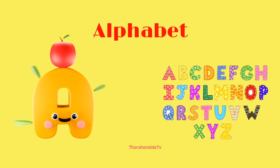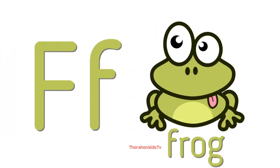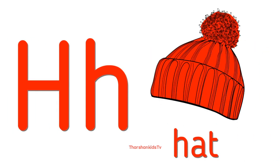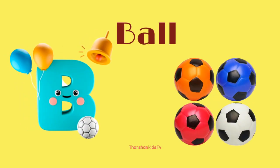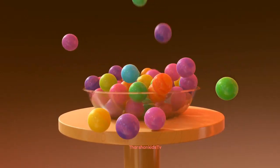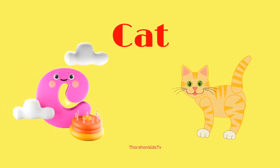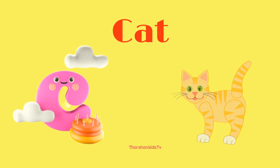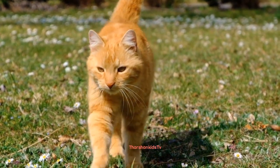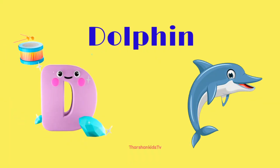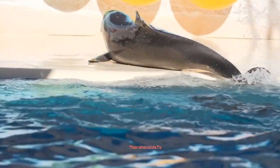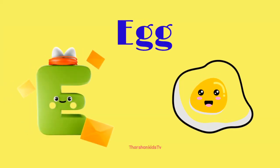A for alphabet. B for ball. C for cat. D for dolphin. E for egg.